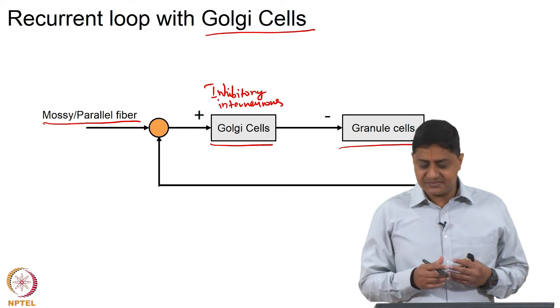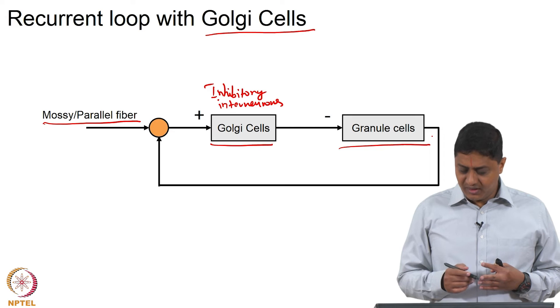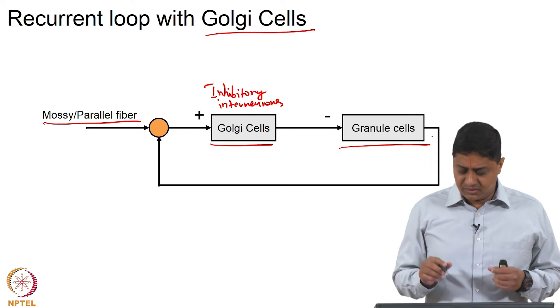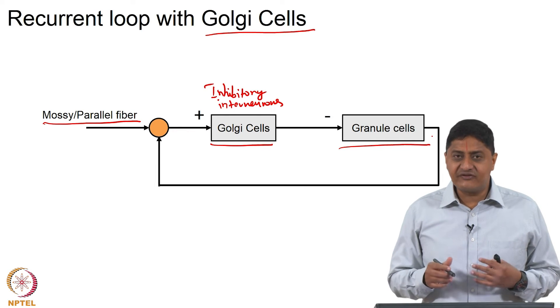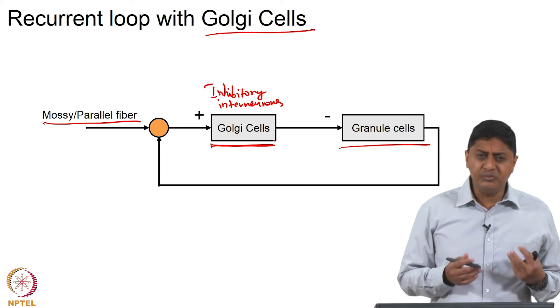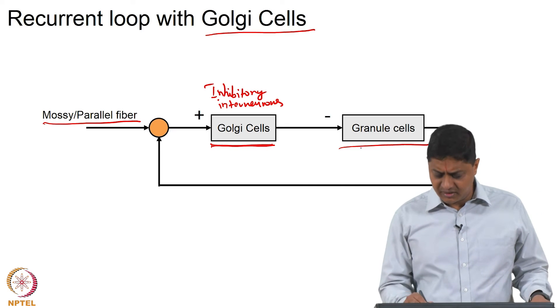That means there is a need to control which granule cells are firing when, etcetera. Golgi cells perform this crucial activity. What could be the effect of Golgi cell activity on granule cells? Well, there are two ways in which Golgi cells could affect the functioning of the granule cells. First is it could affect the magnitude of the total response, and it could affect the duration of activity of the response.